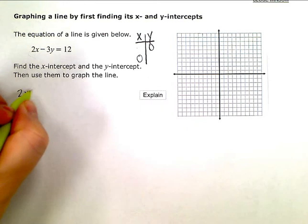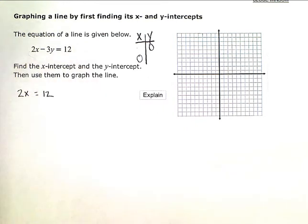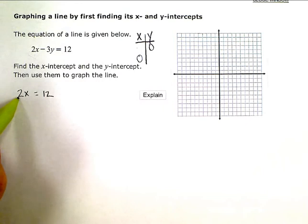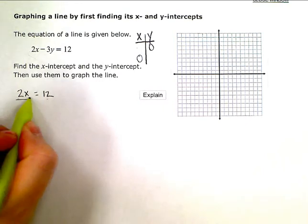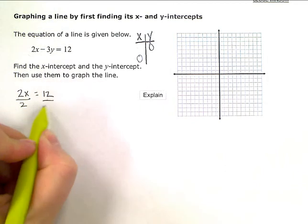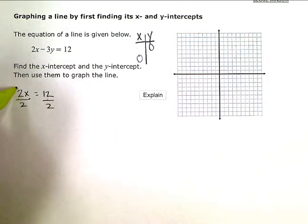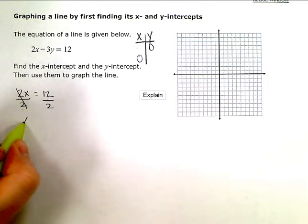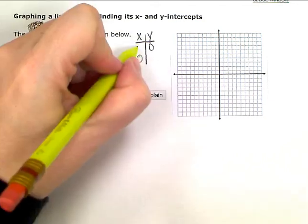2x = 12. You can either solve this in your head—2 times what number gives 12?—or you can divide both sides by 2. So x = 12 ÷ 2, or 6.